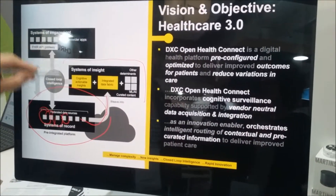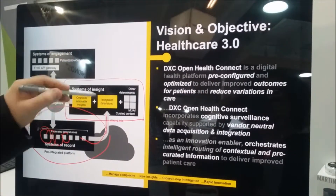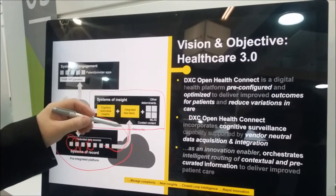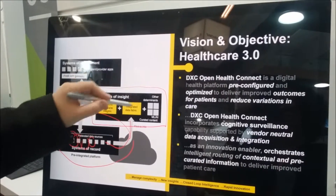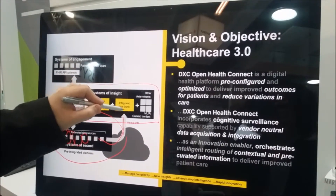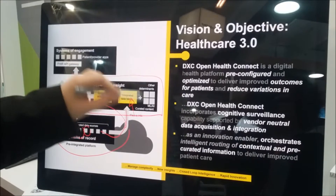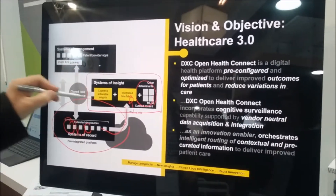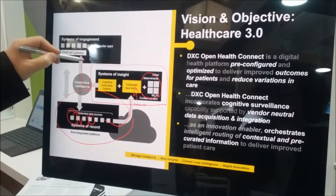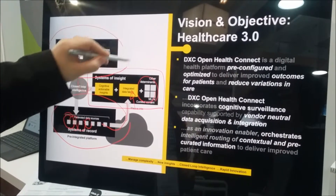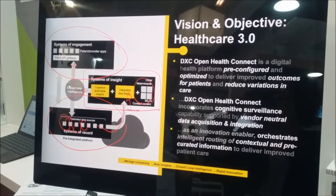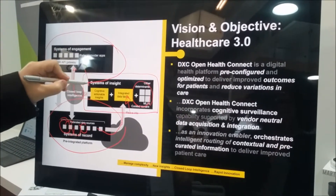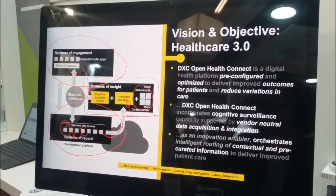What we call the system of insights — we aggregate the data here with structure, and based on that structure we can apply rule-based rules, insights, and machine learning capabilities to trigger closed-loop intelligence to what we call the system of engagement, which are applications that could be set on top of the platform.